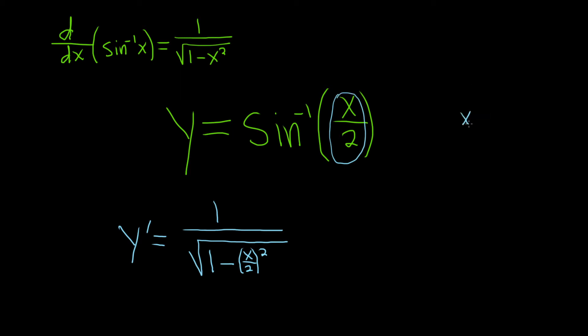To think of that in an easier way, we can write x over 2 as 1 half times x. We just take the derivative of x, which is 1, and then the 1 half hangs out. So we get times 1 half.